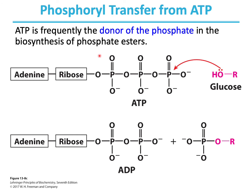ATP is frequently the donor of the phosphate in the biosynthesis of phosphate esters, which involves phosphoryl group transfer. In this reaction catalyzed by an enzyme, glucose attacks the phosphoryl center of ATP, and the phosphate leaves from ATP to release ADP, while the phosphate is now attached to glucose. This is a characteristic phosphoryl transfer reaction.